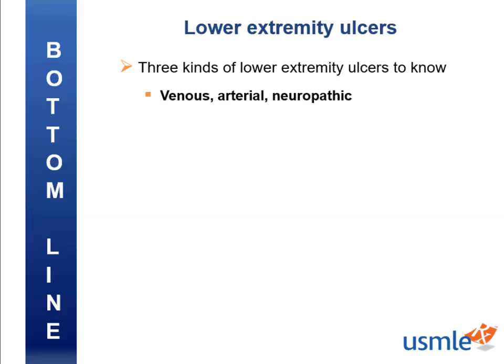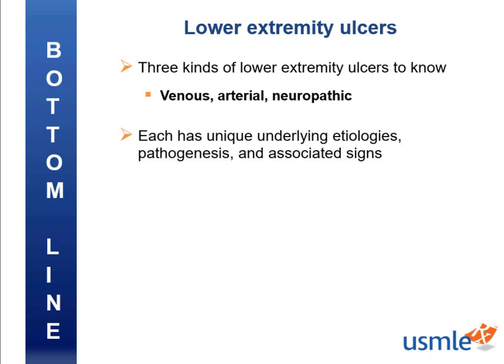Remember that we covered three types of ulcers today — venous, arterial, and neuropathic — which can be differentiated by their underlying etiologies, pathogenesis, and associated signs and pain. Be sure to check out the table comparing them by each of their characteristics in your musculoskeletal chapter in First Aid. When reading question stems or chart-checking your patients, take note of their past medical history as that can clue you into what type of ulcer they might have — if it's in a question stem, there's usually a reason. My name is Lindsay and it's been a joy walking you through First Aid's musculoskeletal chapter. If you thought this video was helpful, throw a thumbs up below. I'll see you back here for more First Aid Express videos. Good luck and happy studying.